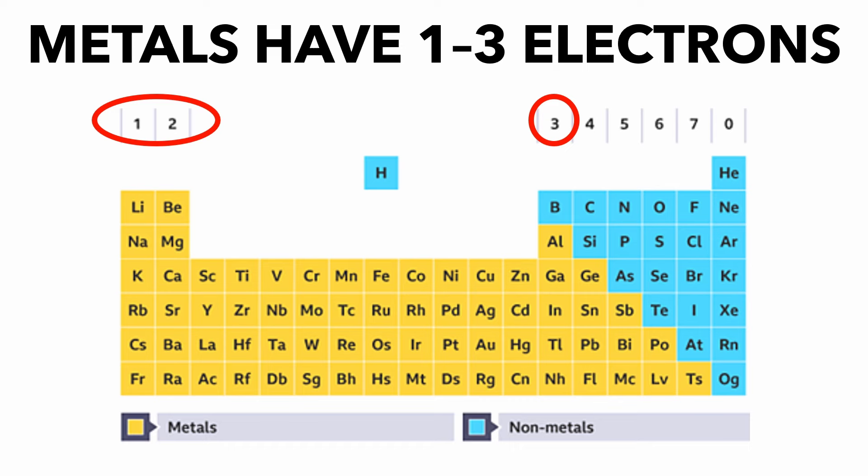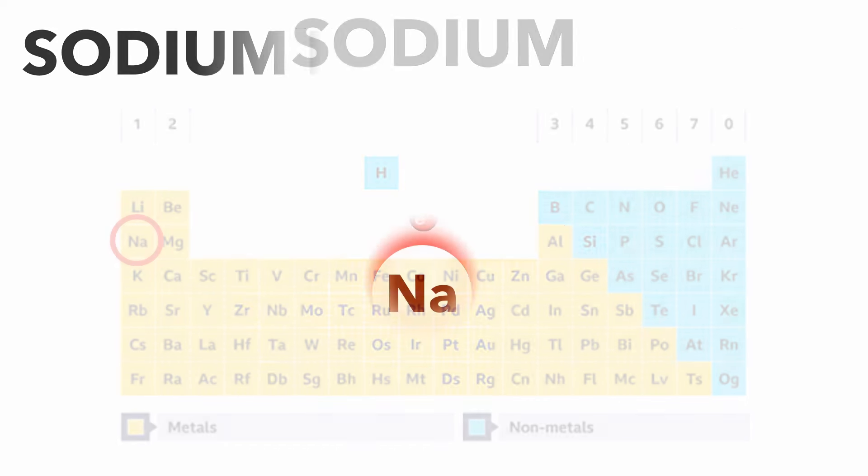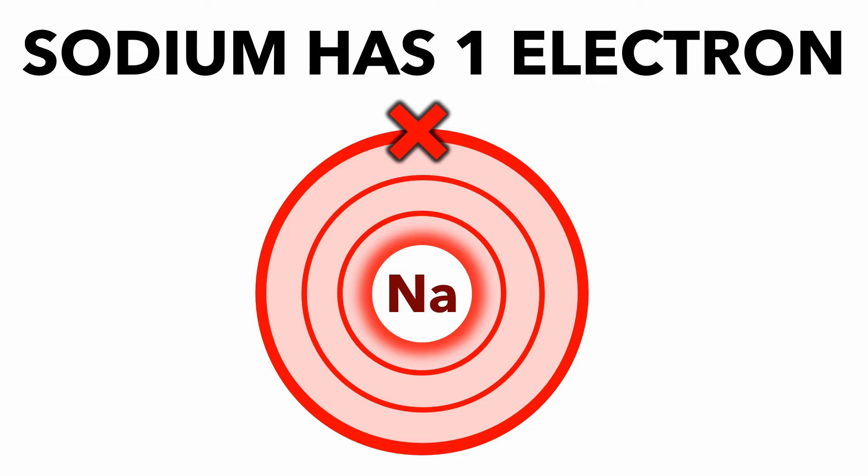All metal atoms generally have between one and three electrons in their outer shell. For example, sodium has one in its outer shell, shown as a cross.